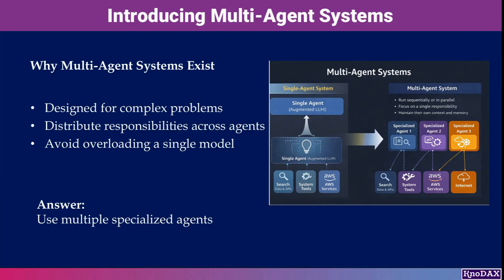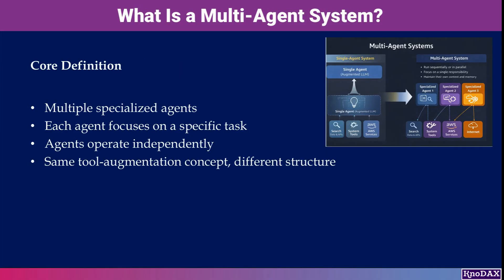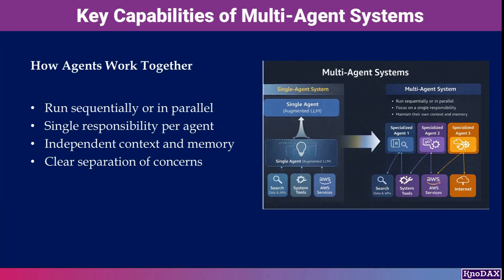Instead of forcing one agent to do everything, we distribute the work across multiple specialized agents. A multi-agent system extends the same tool-augmentation idea, but instead of attaching many tools to one agent, we introduce multiple agents. Each agent is designed to focus on a specific task and operates independently. These agents can run sequentially or in parallel.